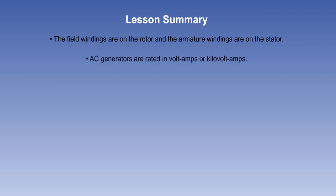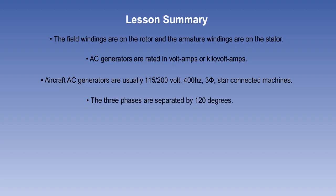AC generators are rated in volt-amps or kilo-volt-amps. Aircraft AC generators are usually 115/200 volt, 400 hertz, three-phase star-connected machines. The three phases are separated by 120 degrees.